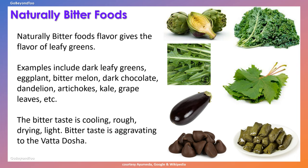When it comes to naturally bitter foods, these have a flavor given by leafy greens and leafy vegetables. Examples include dark leafy greens, eggplant, bitter melon, dark chocolate, dandelion, artichoke, kale, and grape leaves. Bitter taste is cooling, rough, drying, and light. Bitter taste is aggravating to the vata dosha.